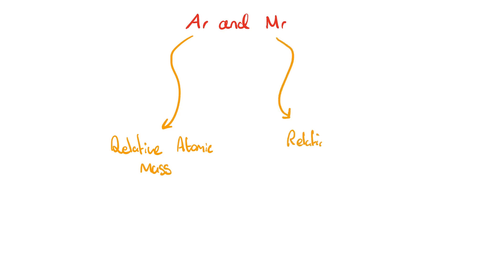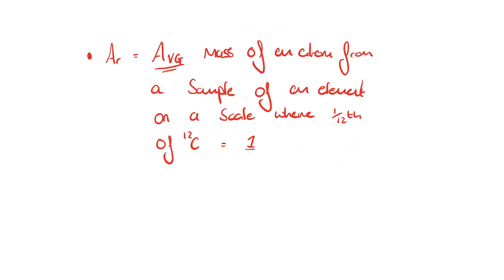Quickly before we move on to new content, a bit of a refresher on AR and MR — relative atomic and relative molecular masses respectively. You need to be able to define both of these and be comfortable with the notation AR representing relative atomic mass and MR representing relative molecular mass. The definitions are: the average mass of an atom from a sample of an element on a scale where 1/12th of carbon-12 is 1, and relative molecular mass: the average mass of a molecule from a sample of molecules on a scale where 1/12th of carbon-12 is 1.